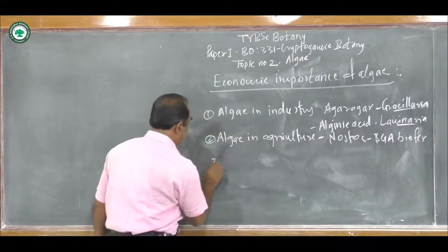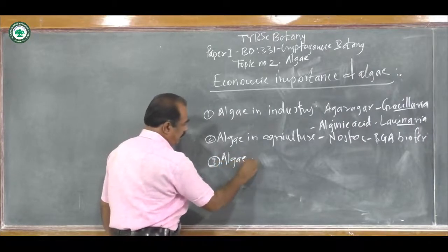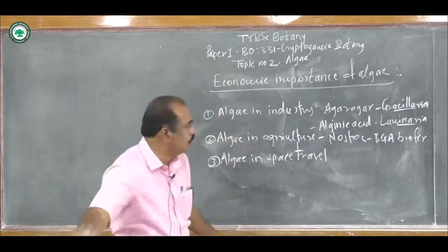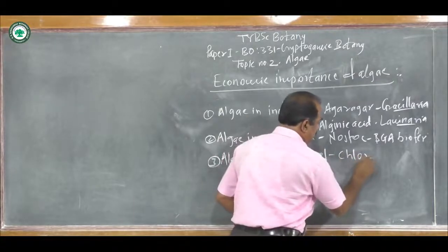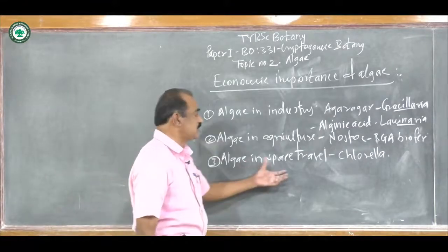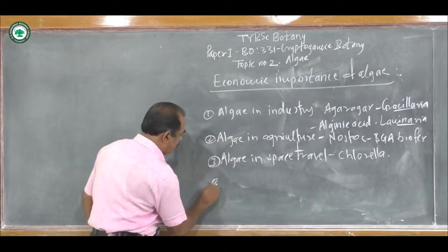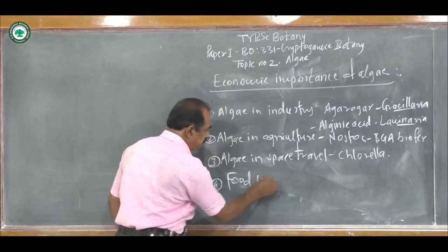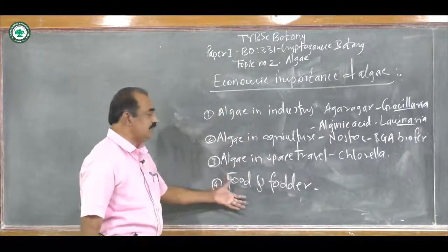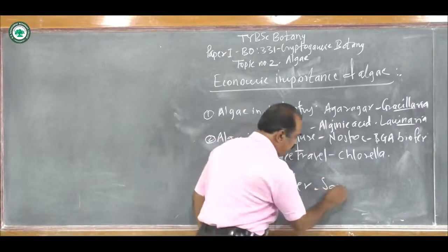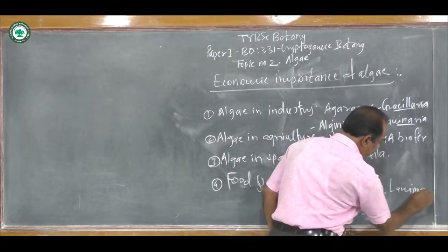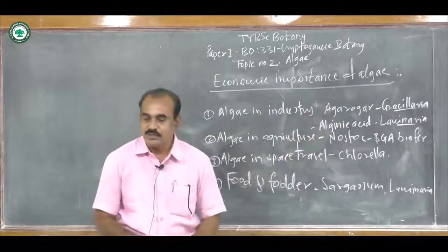Next is Algae in space travel. The example is Chlorella. The multiplication rate of Chlorella is very fast, so it is used as food in space travel. Then, Algae as food and fodder — there are different types of algae used as food and fodder, for example Sargassum, Laminaria, etc. These are some of the economic importance of Algae.